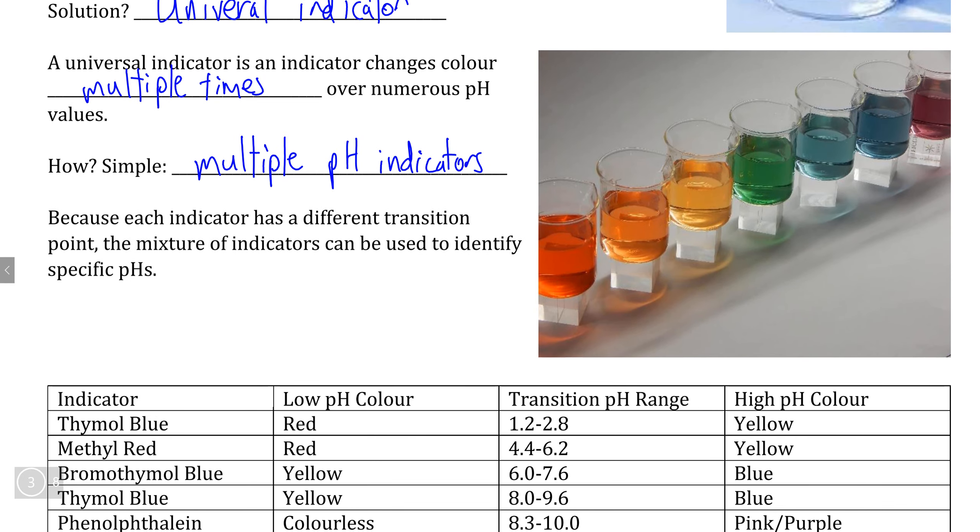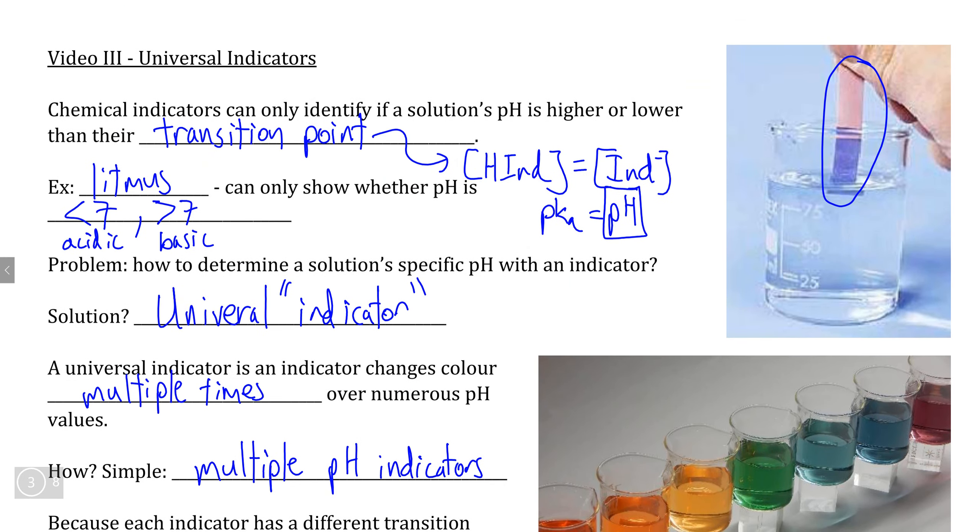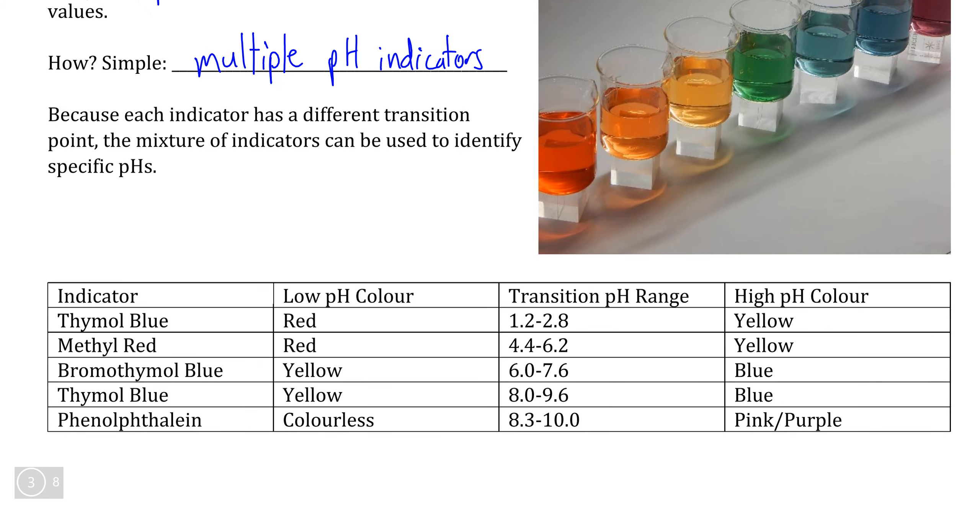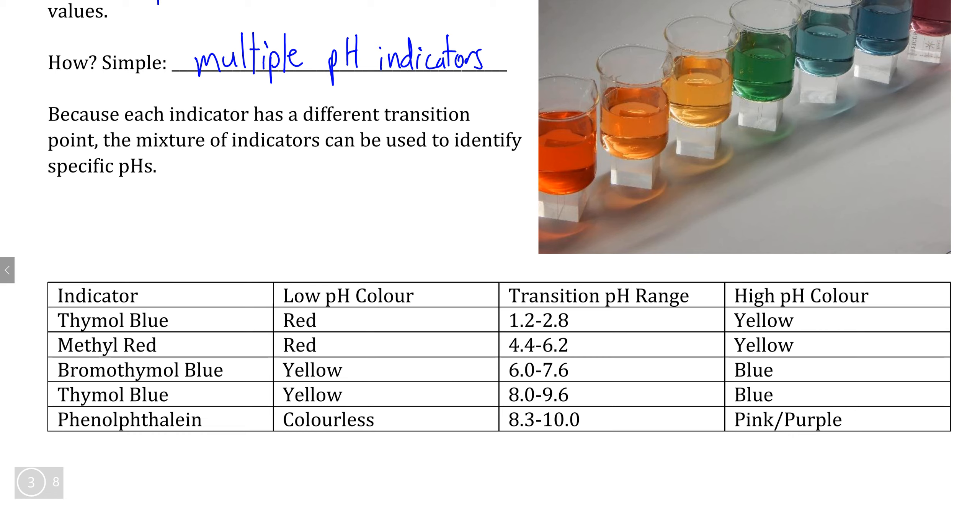Now when universal indicator is mixed together and actually put on to pH paper like this, we can actually end up with universal indicator paper that can give us a relatively good idea of what the specific pH of a solution is, all based upon the fact that we have more than one indicator with multiple transition points.